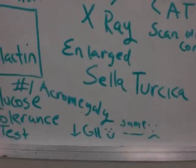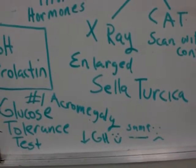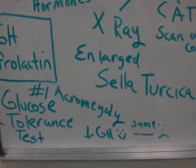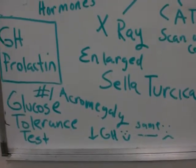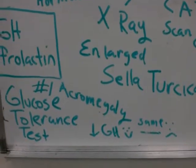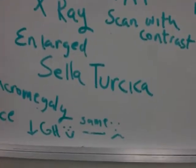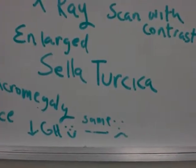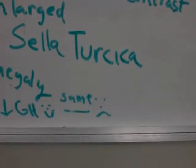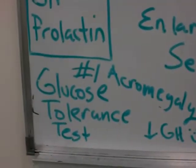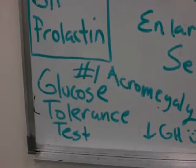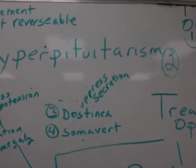During the glucose tolerance test, which can go on for a couple of hours, when the patient gets the bolus of glucose, the growth hormone level should go down. However, if a person has acromegaly and starts out with high growth hormone levels, there will be no change — and that is a confirmation for acromegaly. So the number one lab test for acromegaly is the glucose tolerance test. We've covered physical assessment, labs, and radiographs.